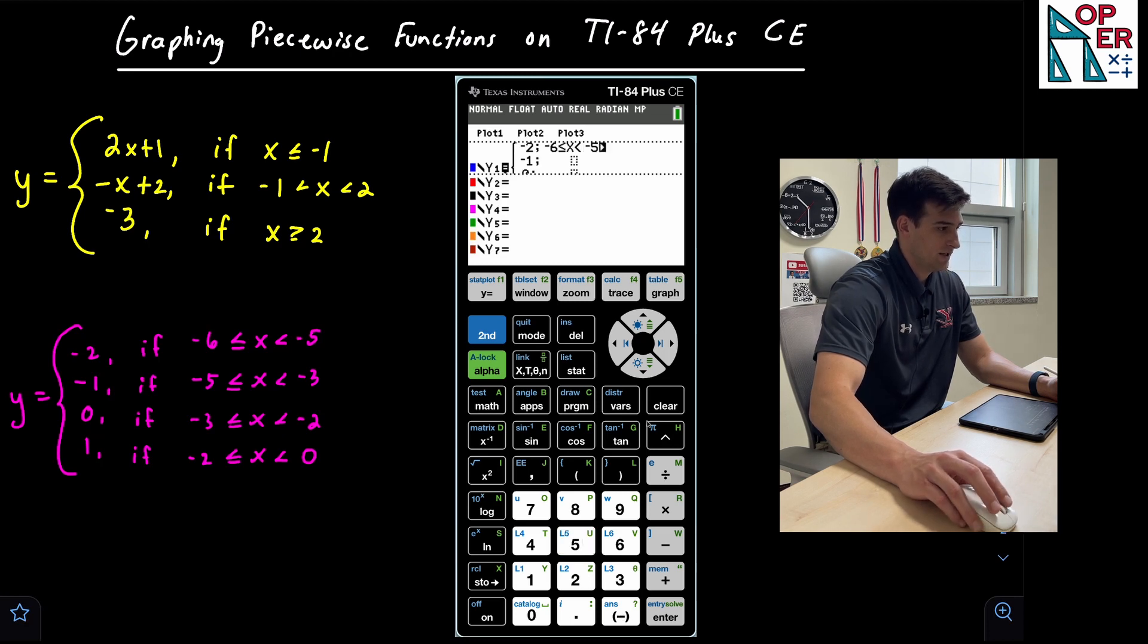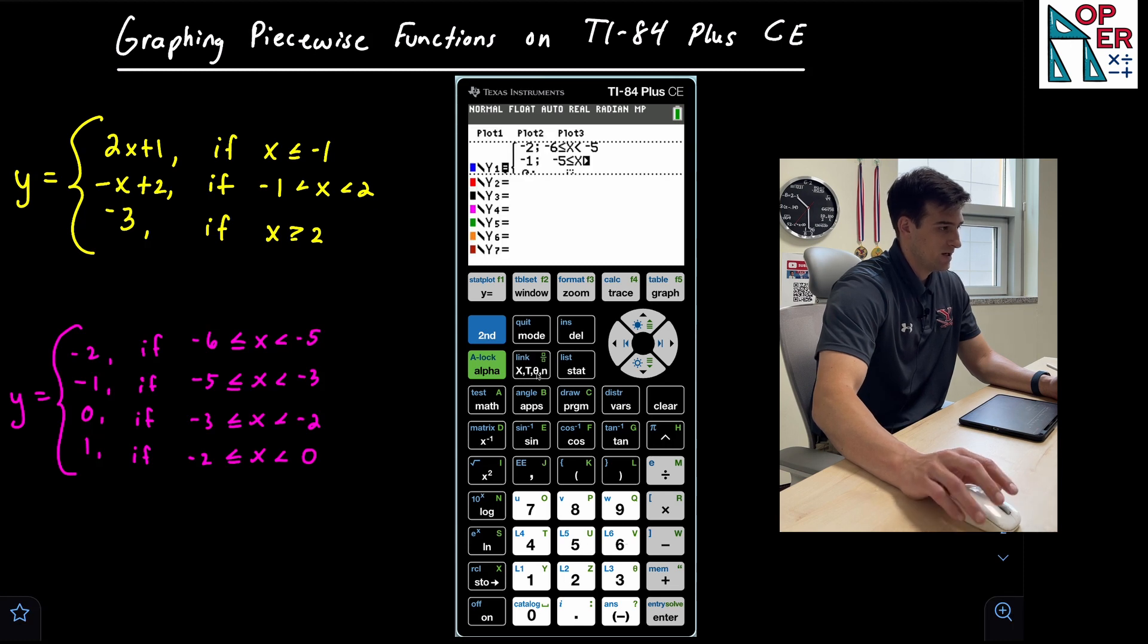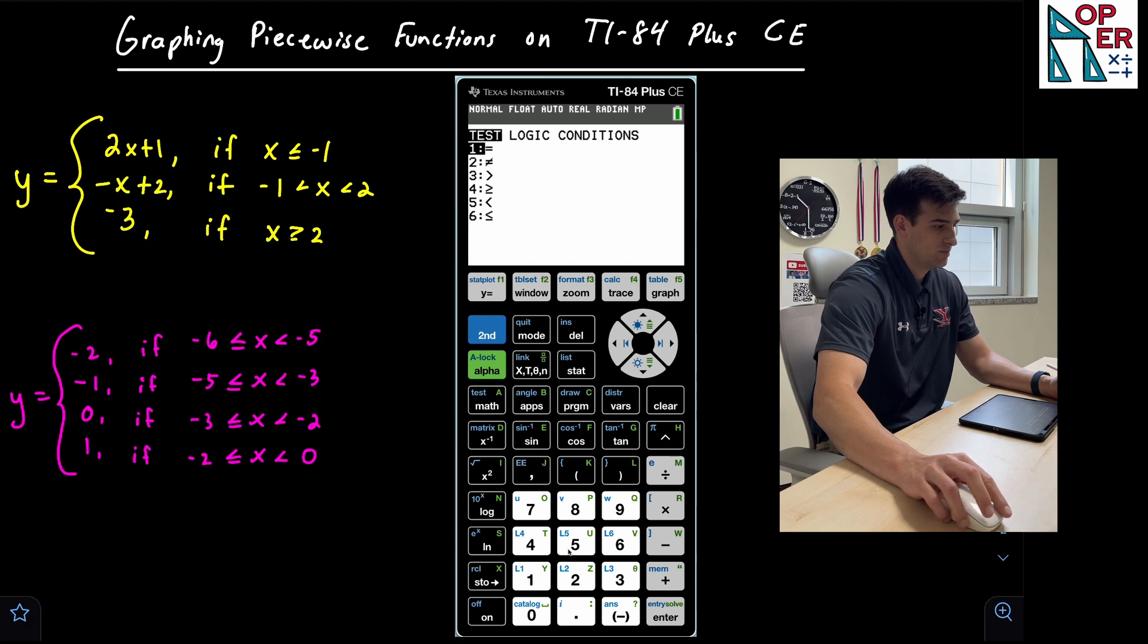And then we're gonna go all the way until negative five. Now for negative one, we have negative five, and then we do second math. And once again, we want less than or equal, which is option six. We type in our variable. Once again, we want less than, so second math, which would be option number five. And then we're going all the way to negative three.